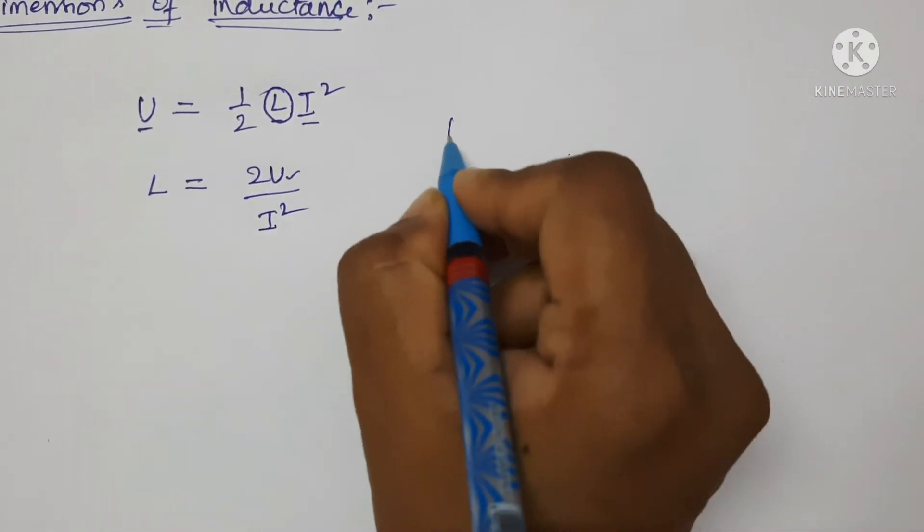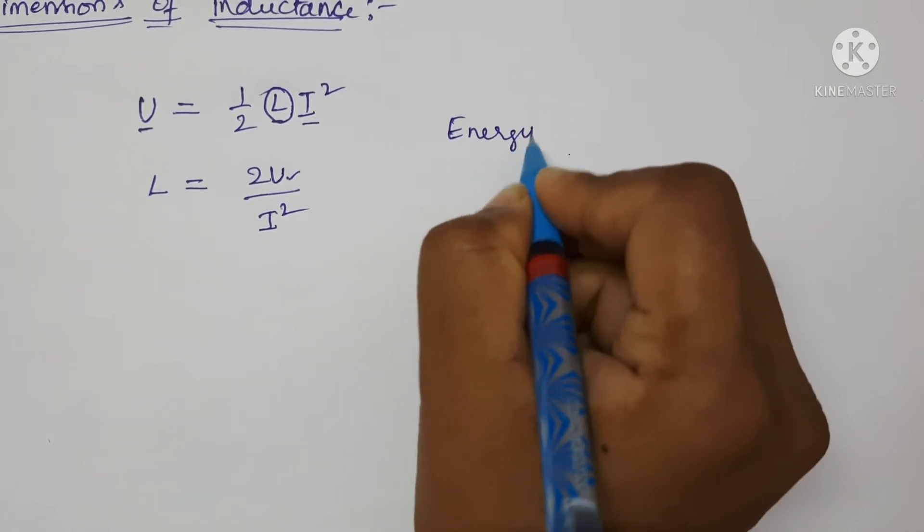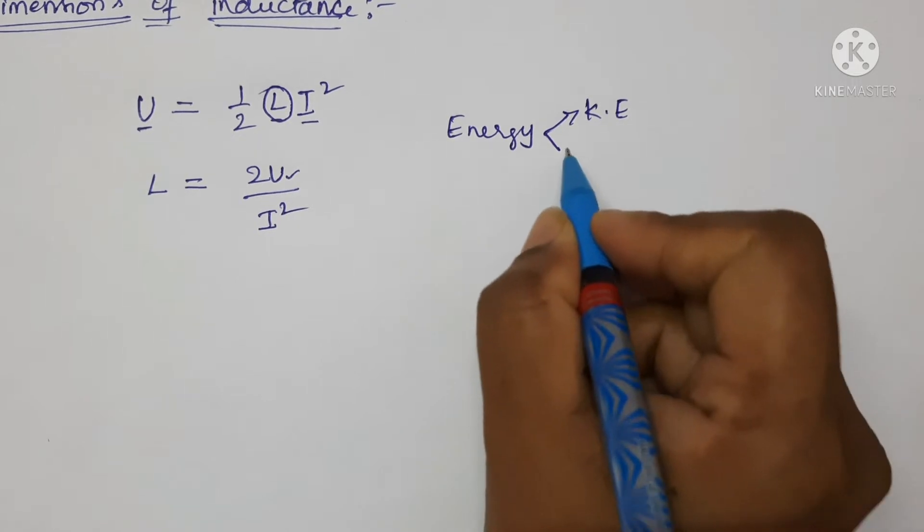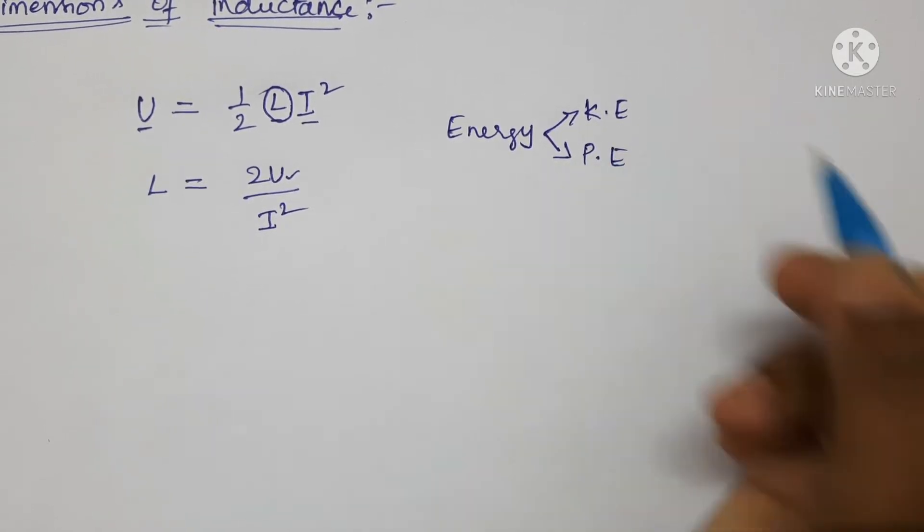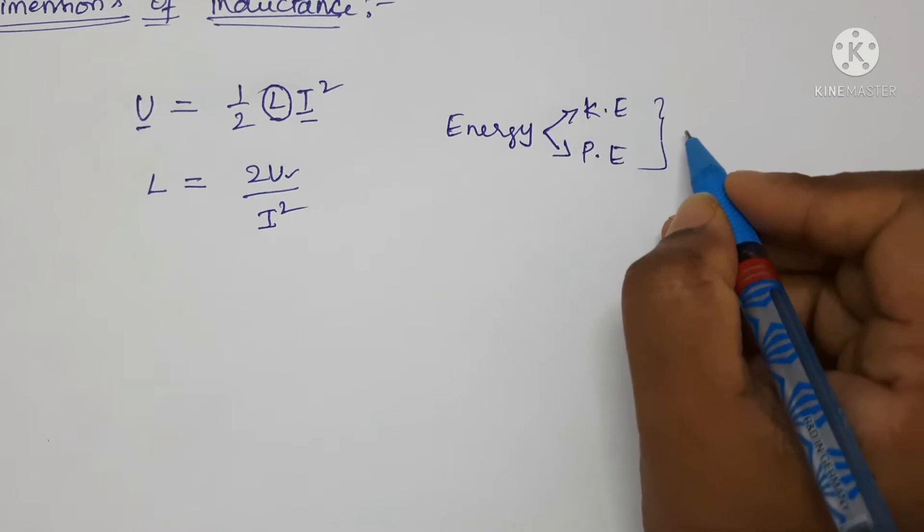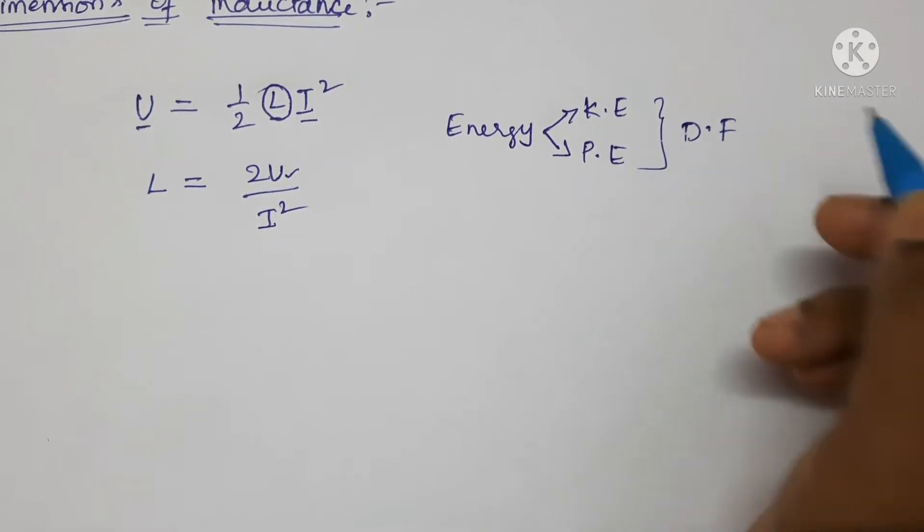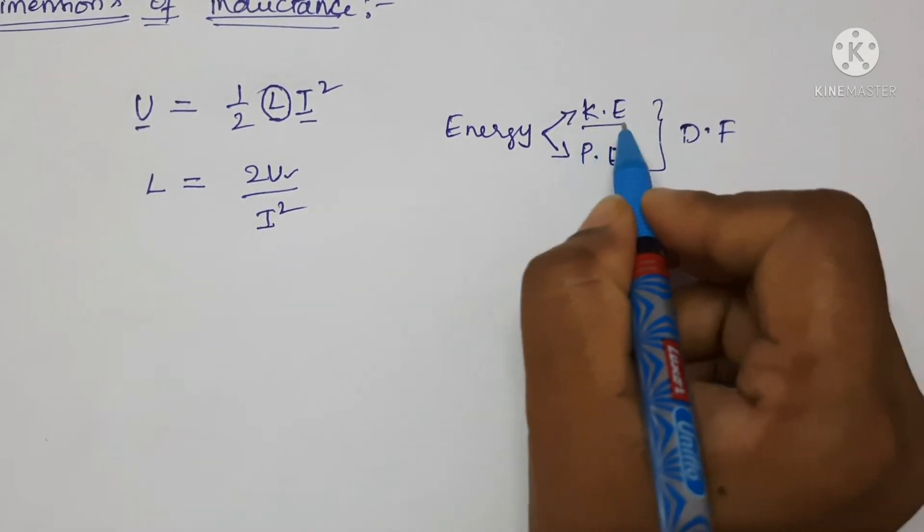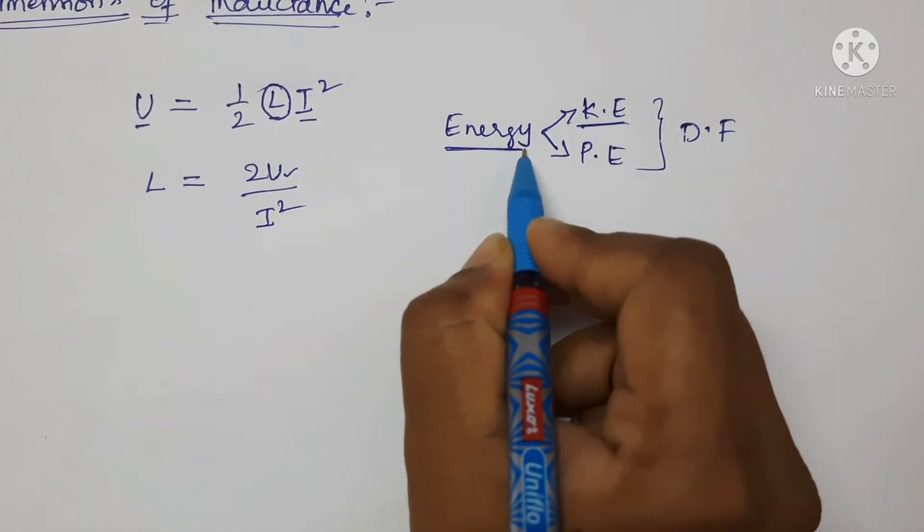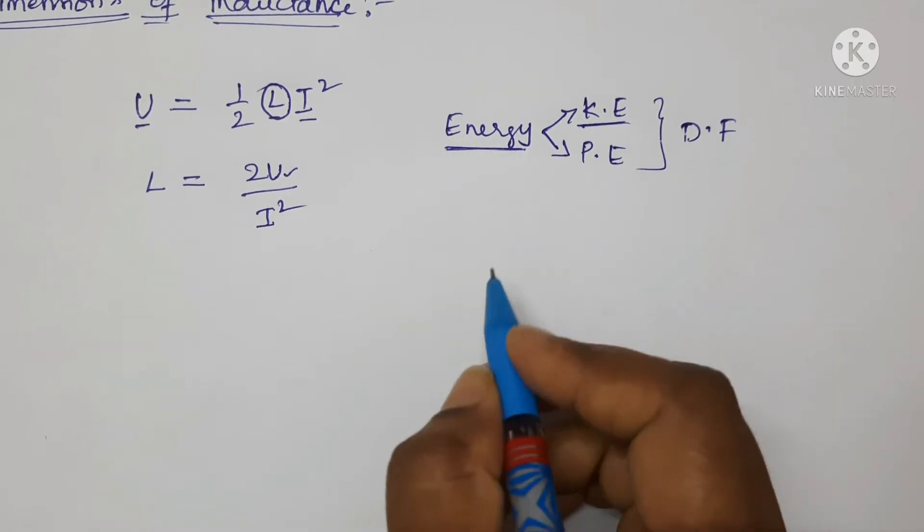Energy has two types: kinetic energy and potential energy. Both have the same dimensional formula. I am going to prove for kinetic energy. If you want to check it out, I will give the link in the description box for the dimensions of energy.